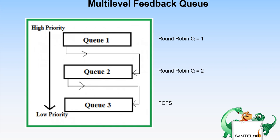One implementation of a multi-level feedback queue is as follows: when a process starts executing, it first enters Q1.